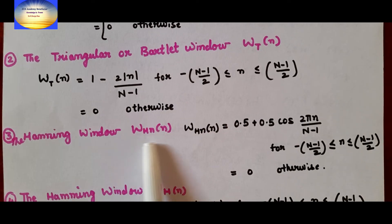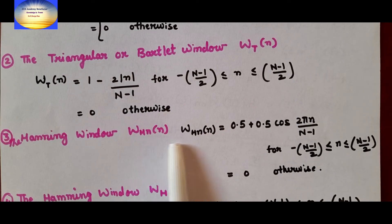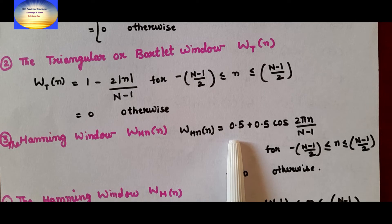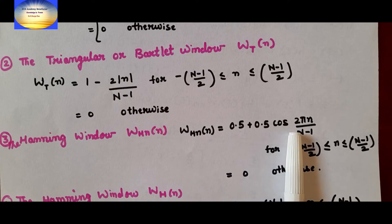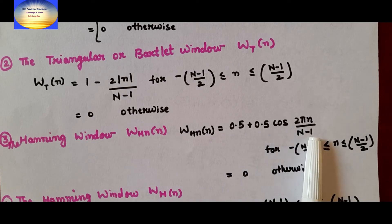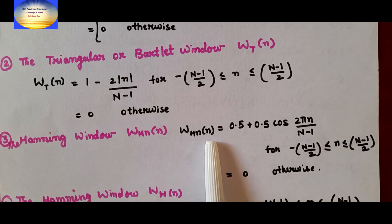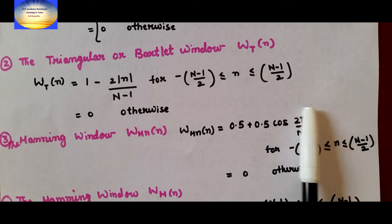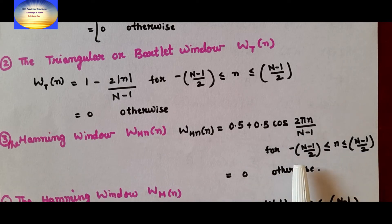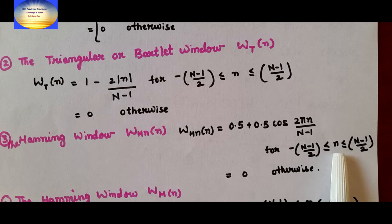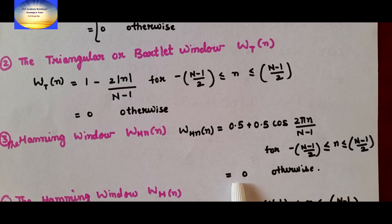The Hanning window W_Hn(n): W_Hn(n) = 0.5 + 0.5cos(2πn/(N-1)), for -(N-1)/2 ≤ n ≤ (N-1)/2, and 0 otherwise.